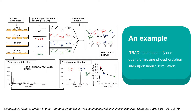After mass spectrometry, the identity of the peptide was determined and the area of the tag masses — 114, 115, 116, and 117 mass-to-charge ratio — was used to calculate the ratio of phosphorylated peptides at the different time points compared with 5-minute insulin stimulation.